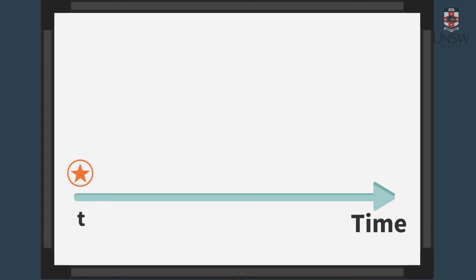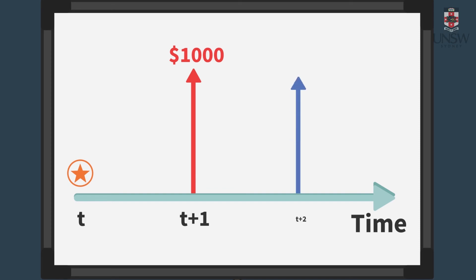Consider the following example. From the point of view of a given date t, a cash flow of $1,000 after one year is generally not worth the same as a cash flow of $1,000 after two years. Except in very rare cases, people prefer having a dollar earlier rather than later.